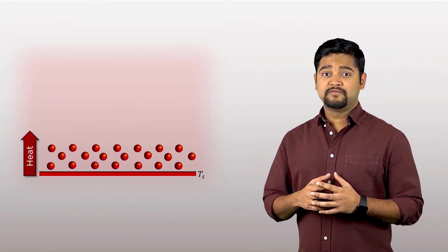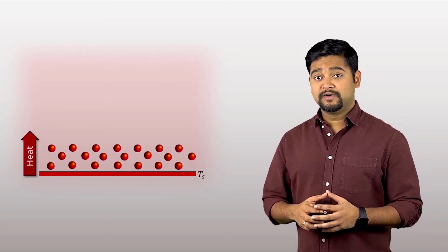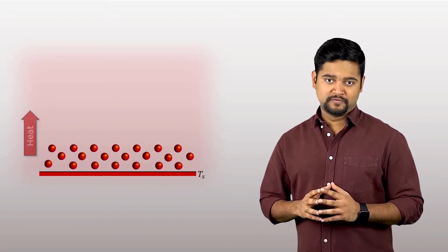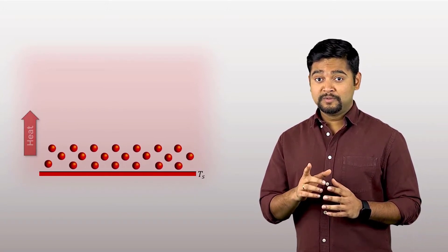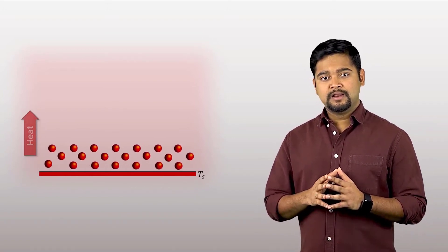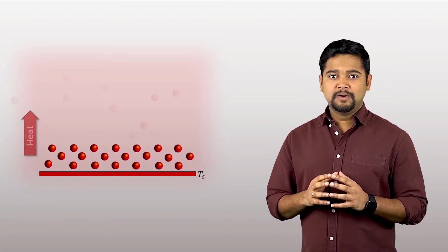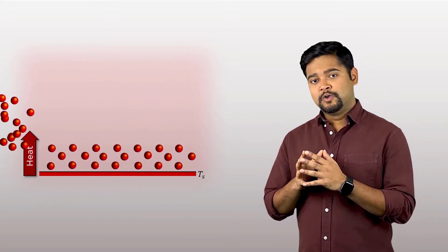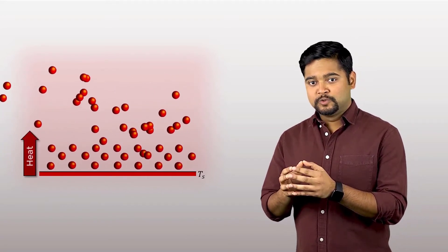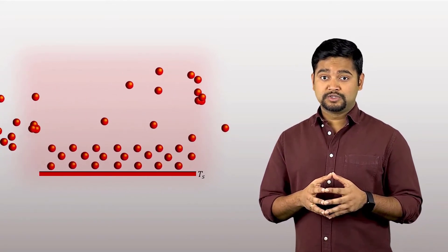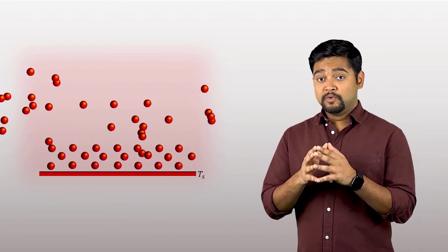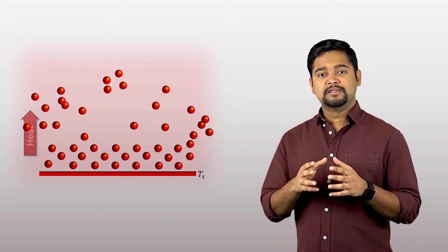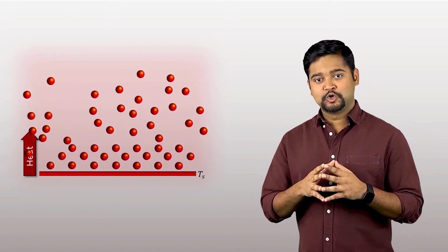So far, we have talked about heat transfer via molecular interactions only, and without any bulk motion of the fluid. Remember, the medium was stationary. Now, if we add some bulk motion of the fluid, or in other words, the high energy particles not only provide energy to the neighboring particles via collision, but now they move and they take that energy from one place to the other. Then this mode of heat transfer is called convection.